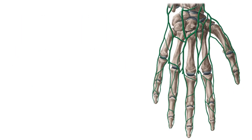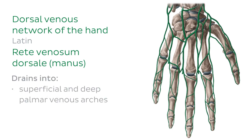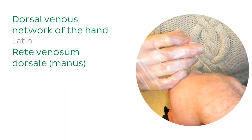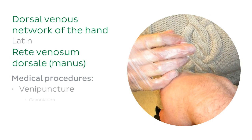If we flip the hand around to look at the dorsal view, we can see the superficial veins that make up the dorsal venous network of the hand highlighted in green. These veins can normally be palpated quite easily on the back of your hand. As well as draining into the superficial and deep palmar venous arches, this network also drains into the cephalic vein and the basilic vein. Its proximity to the surface makes it a good site for venipuncture and cannulation.